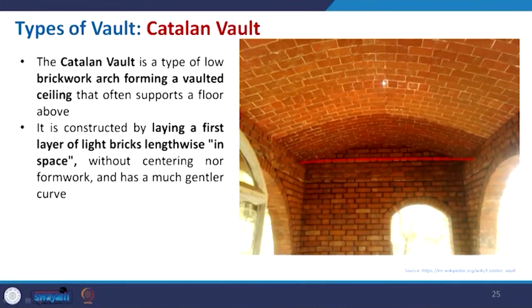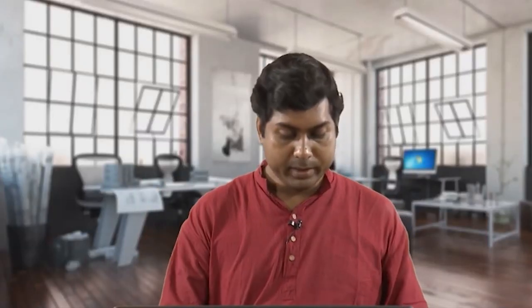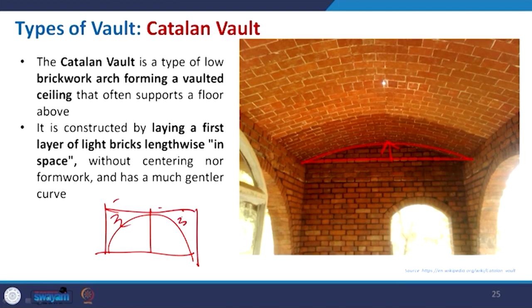The Catalan vault has a very low rise — it is almost a flat vault. The rise is very minimal and it is made with brick. This kind of vault is used where the upper portion of the vault is to be utilized. Whenever you increase the rise you get better structural results, but you cannot use that space above. If you make it almost flat you can use minimum material and use the upper storey above.